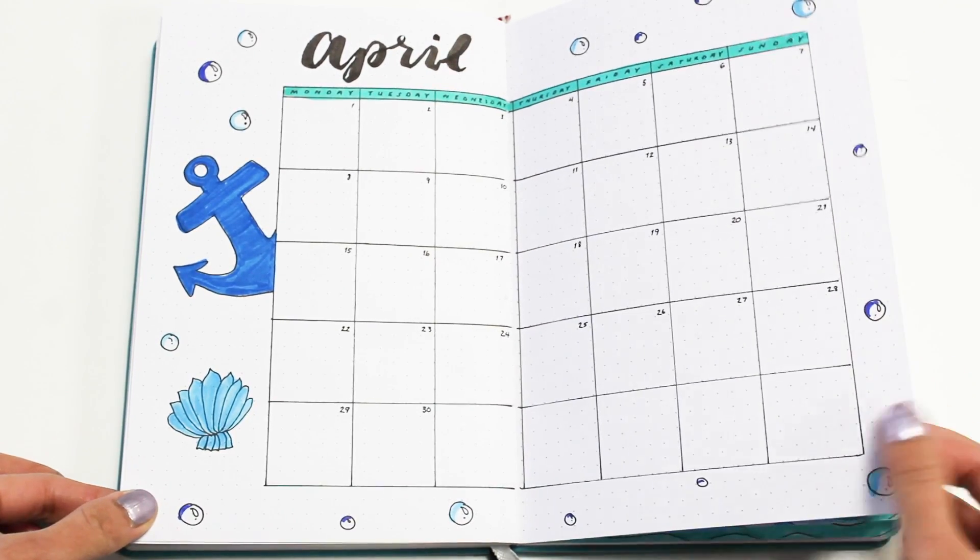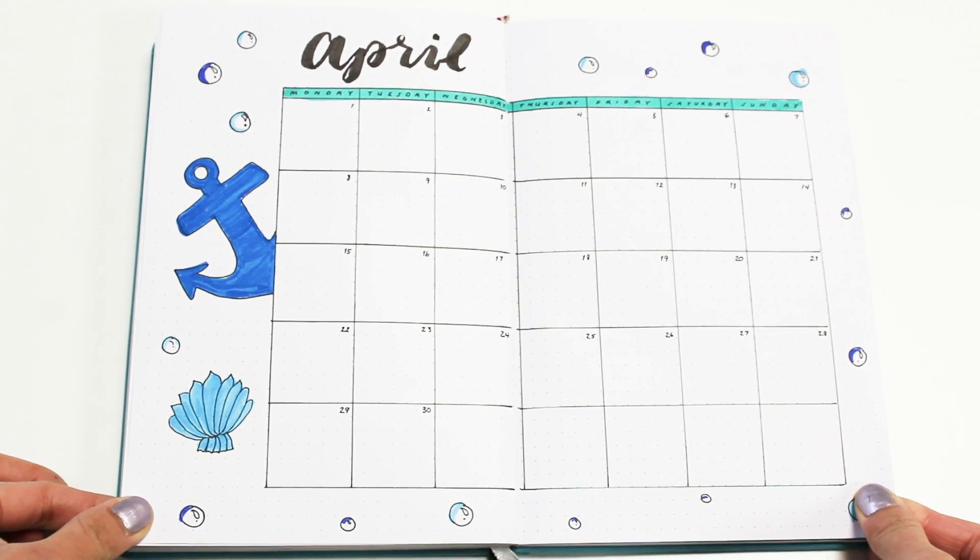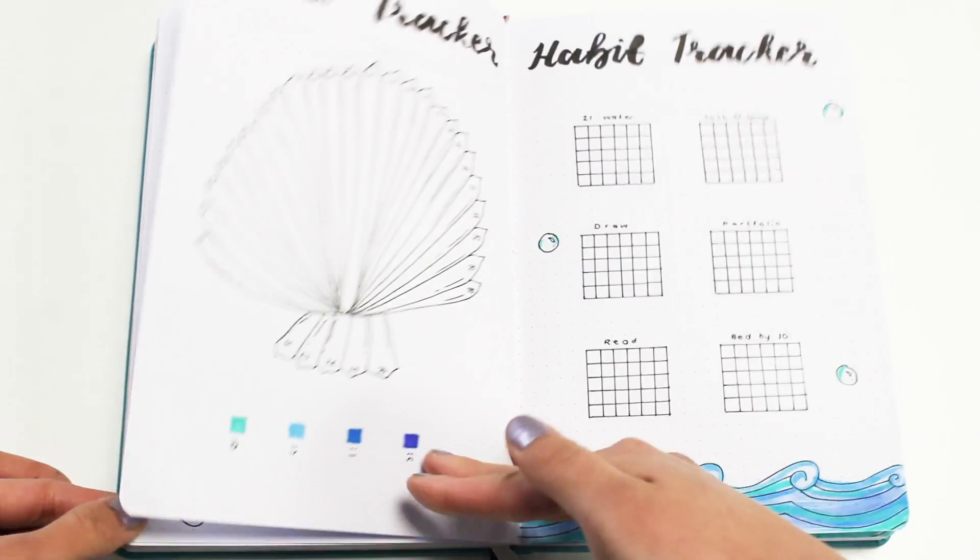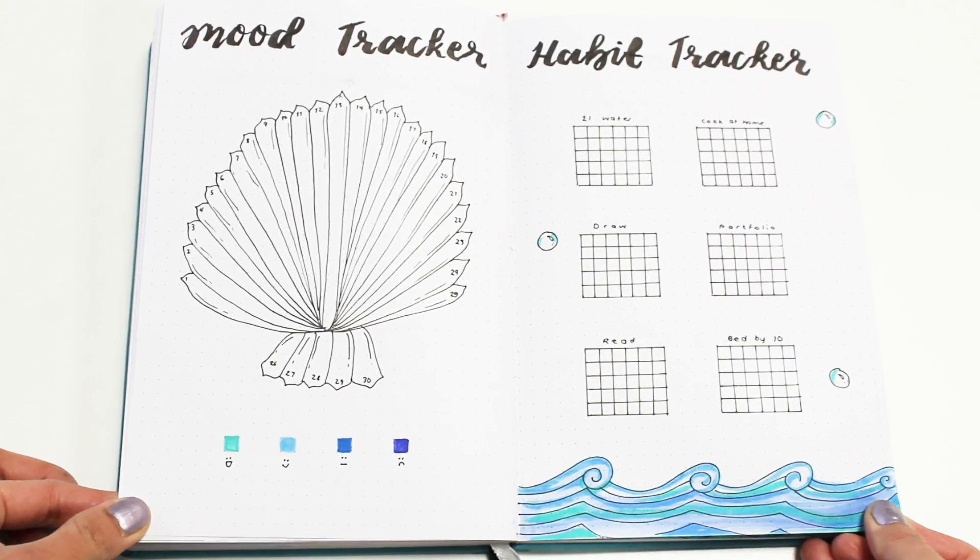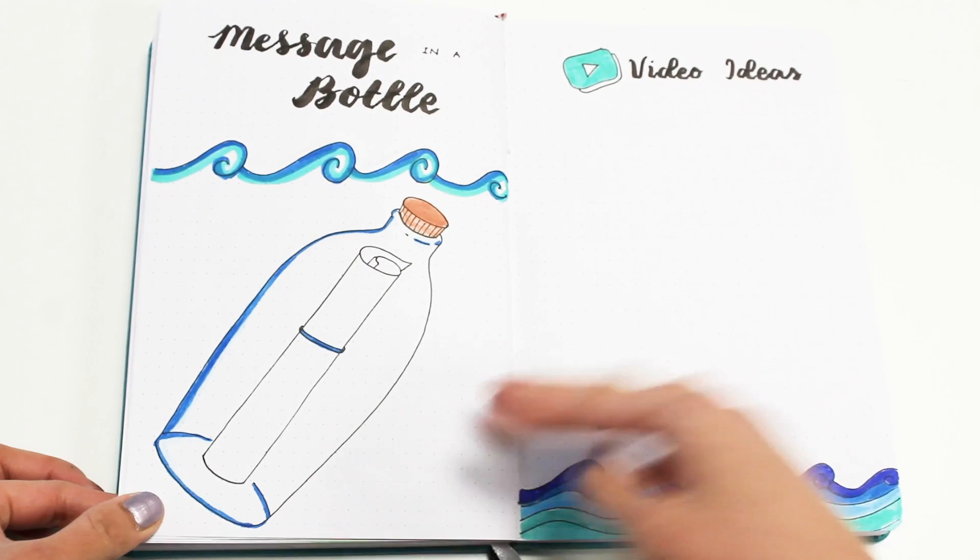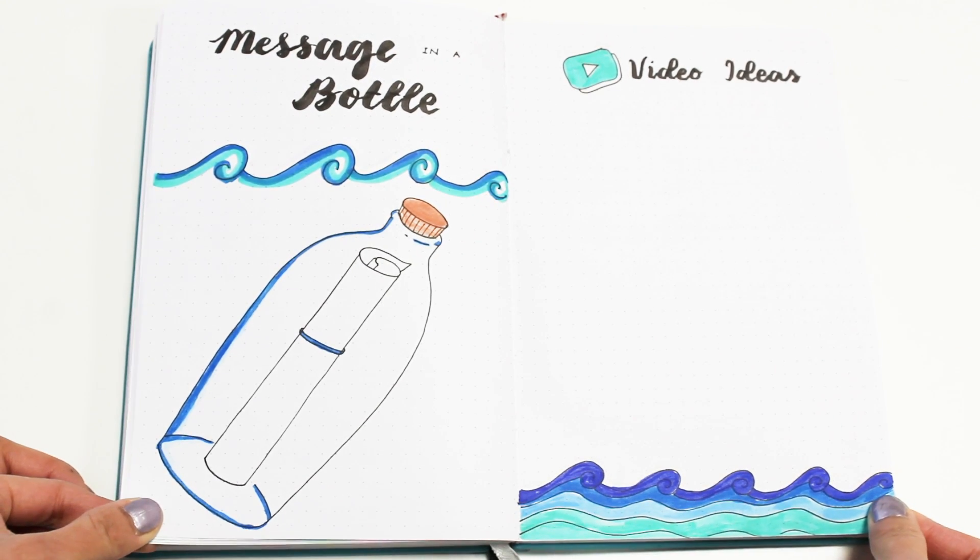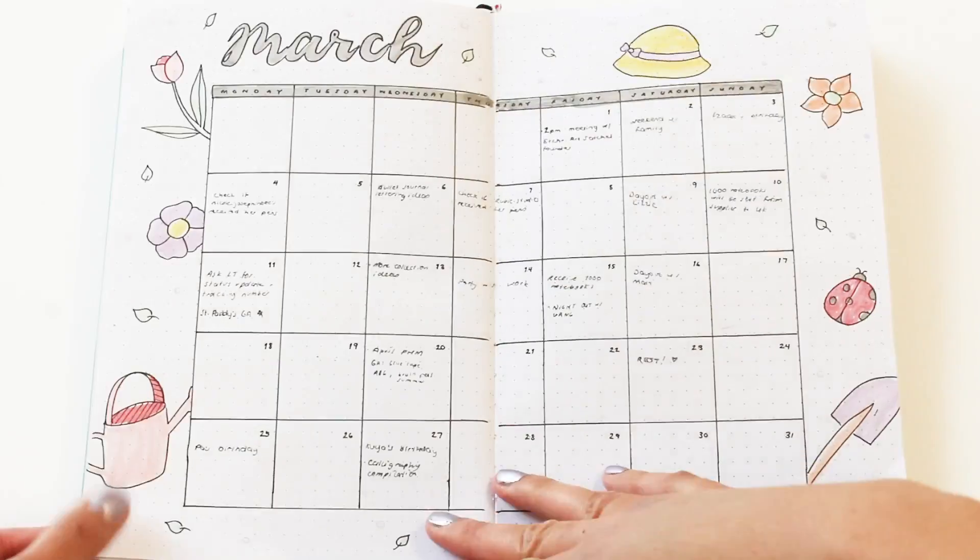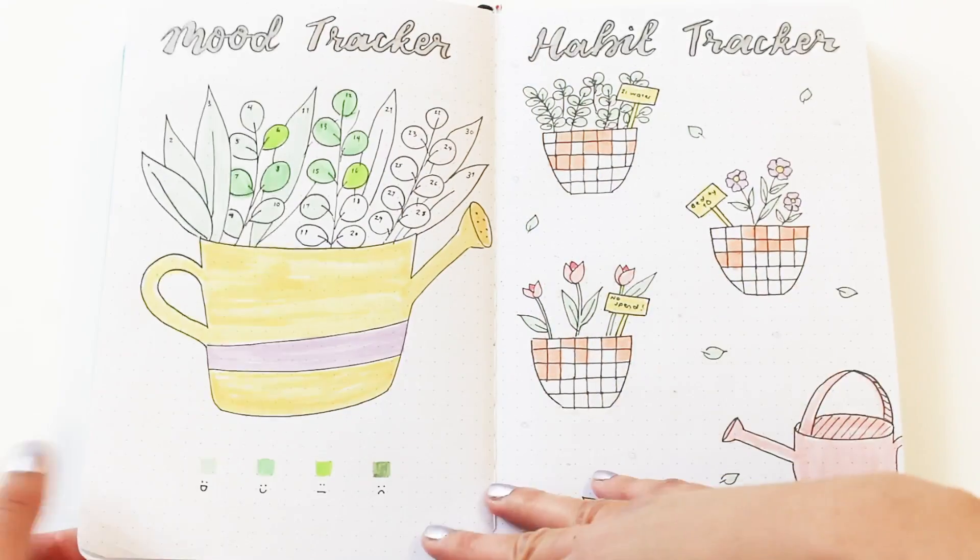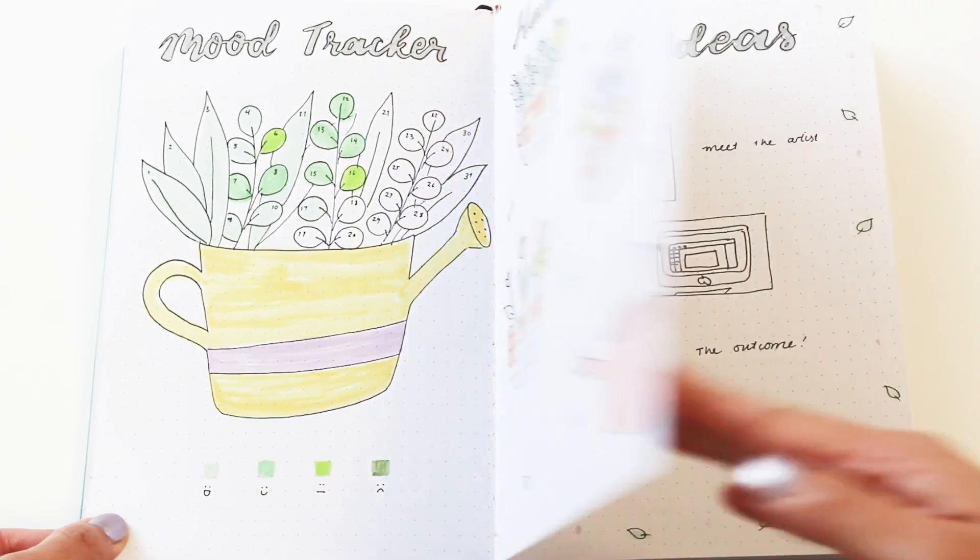Hi everyone, welcome back to our channel. It's time for another plan with me, and for my theme this April, I asked you to vote on our community board and the theme ocean won. Thanks to everyone who voted and helped us pick a theme. Be sure to keep an eye out on our community board for special announcements, polls, and things like that. Also, since this is a plan with me video, we will be hosting another giveaway at the end, so please make sure to look out for that and keep watching.